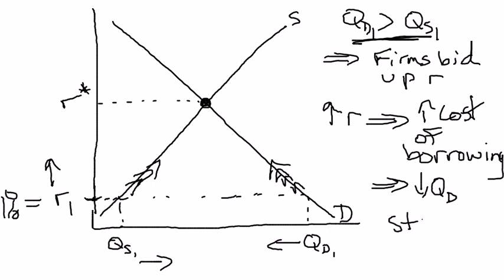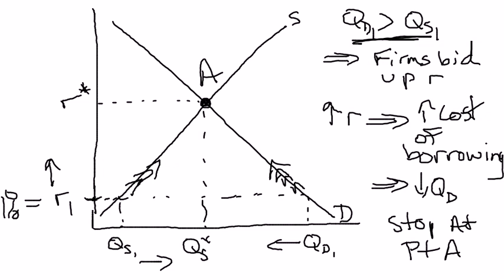So you're going to stop at point A. This whole adjustment process stops when you reach point A. What's special about point A is that quantity supplied star equals quantity demanded star — the quantity supplied of loanable funds now equals the quantity demanded. Every firm that wants to borrow can find a bank willing to lend, so they have no more incentive to bid up the real interest rate. And that's what's so special about equilibrium: once you're there, there's no incentive for either the demand side or supply side to alter the real interest rate. If you're not there, there's a built-in tendency to return to it.